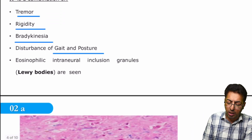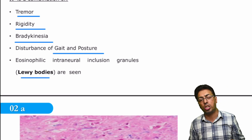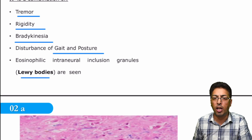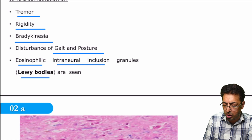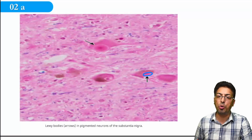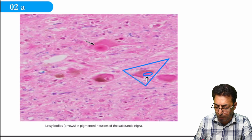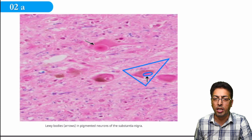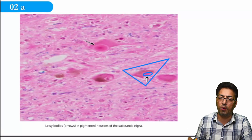Pathologically, what is seen is something given the name Lewy bodies. There are many eponymous bodies asked in pathology and medicine, but Lewy bodies are characteristic of Parkinson's disease. They are eosinophilic intraneuronal inclusion granules. In the figure, this is a Lewy body in the pigmented neurons of the substantia nigra — inside the pigmented neuron you have the Lewy body. An image-based question or one-liner may ask what Lewy bodies are characteristic of, and the answer is Parkinson's disease.